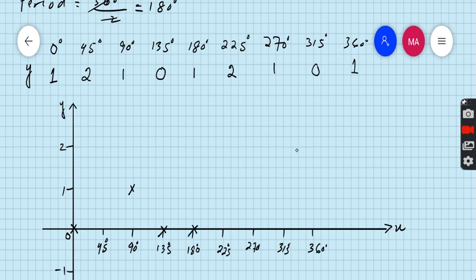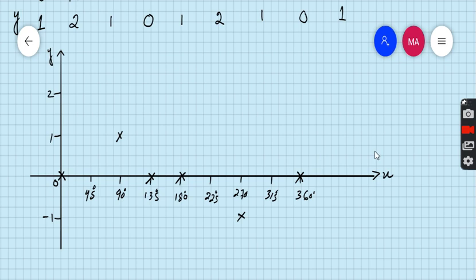Sin 270 is minus 1 and sin 360 is 0. So start from 0, passes through 90, then passes through 180, then through 270. This is the graph of y equals sine x.